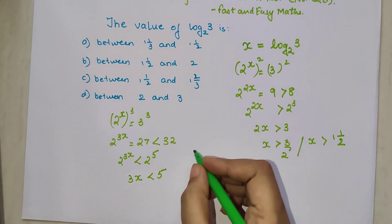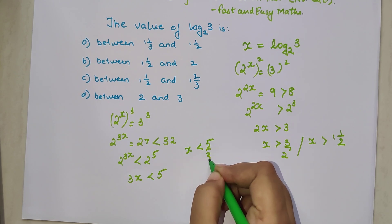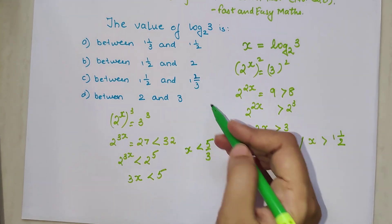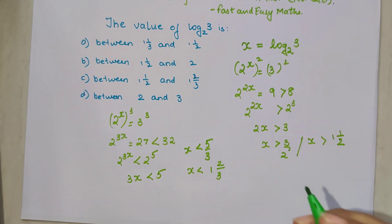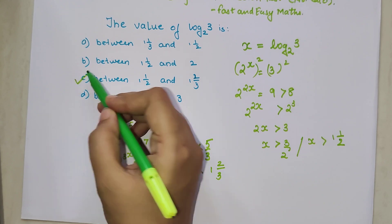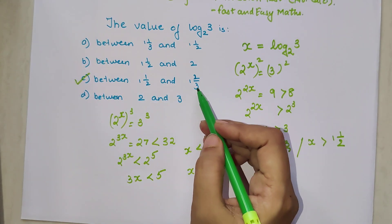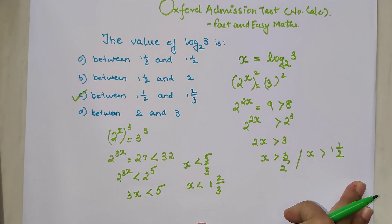So now over here, the x value would be lesser than 5 by 3. So now since here we do not have any 5 by 3 values, I am going to check it out and I will get 1 and 2 by 3. So now from this particular understanding, I can say that it is lying between 1 and a half and 1 and 2 by 3. So option C is my correct option.